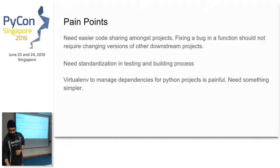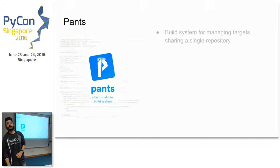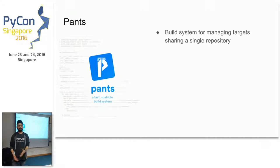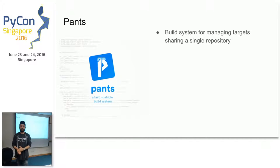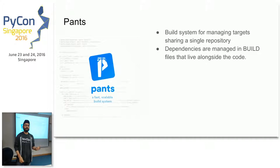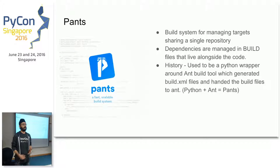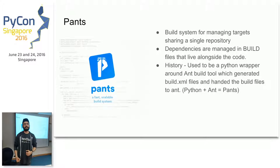So PANTS — it's actually spelled PANTS. It is a build system, a build tool with support for multiple languages, written in Python. It was developed at Twitter and Foursquare to manage multiple build targets in a single repository. Dependencies are managed in build files — think of build files as makefiles that live alongside the code. Why is it called PANTS? It used to be a Python wrapper around Java Ant, the famous Java build tool, generating build.xml files consumed by Ant. Python plus Ant equals PANTS.